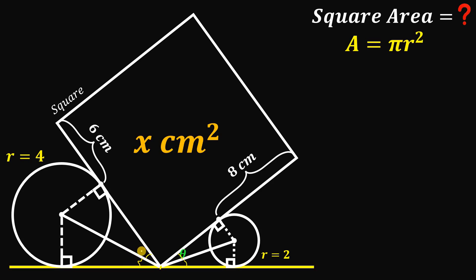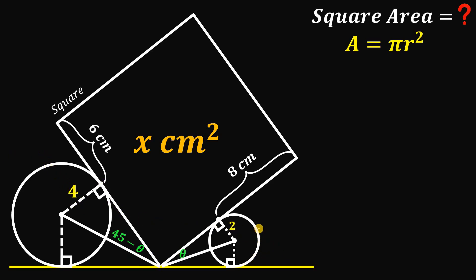Since these congruent triangles share the same angles, and the four angles at the corner of the square must add up to 90 degrees, we can deduce that the remaining angle measures 45° − θ. So the four angles are: (45° − θ), (45° − θ), θ, and θ, which sum to 90 degrees. We also know the radius of the big circle is 4 and the radius of the small circle is 2, which is enough information to find the area of the square.